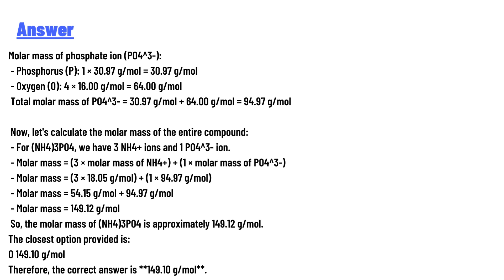Now the molar mass of the phosphate ion PO₄³⁻. Phosphorus: 1 × 30.97 g/mol = 30.97 g/mol. Oxygen: 4 × 16.00 g/mol = 64.00 g/mol. Total molar mass of PO₄³⁻ = 30.97 + 64.00 = 94.97 g/mol.